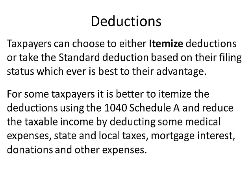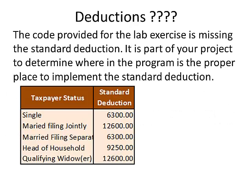As far as deductions, you can choose to either itemize your deductions using Schedule A or take the standard deduction based on filing status — whichever is best for your advantage. For some taxpayers it's better to itemize deductions and reduce the taxable income by deducting medical expenses, state and local taxes, mortgage interest, donations, and other expenses. The code provided in this lab exercise is missing the standard deduction — it is part of your project to determine where in the program to implement the standard deduction and use an array to look it up.